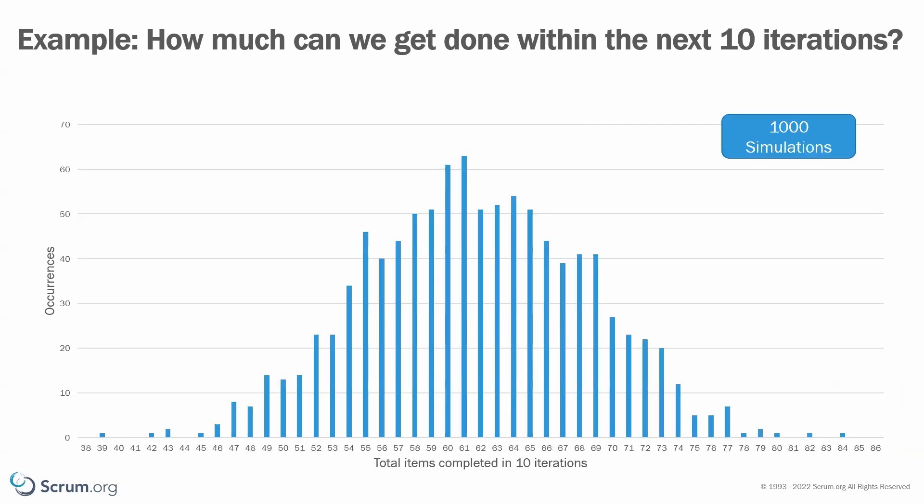In our example, we run 1,000 simulations. After visualizing all those results, the chart might look similar to this. This chart can now help us explore the probabilities of how many items we might complete in ten iterations. On the right side, we see numbers that are very unlikely to achieve, and on the left, we see numbers that are unlikely to end up as low as those suggest. While there is still a remaining probability for the low and high numbers, it's most likely that we will end up somewhere in the middle.